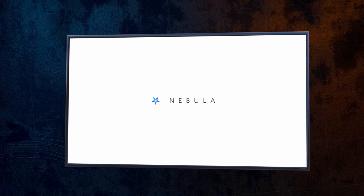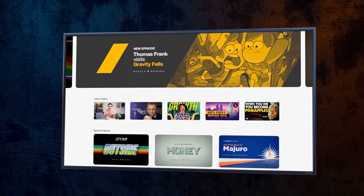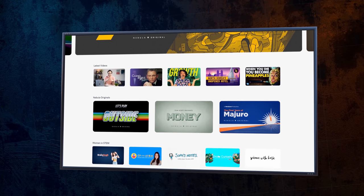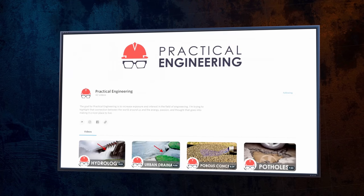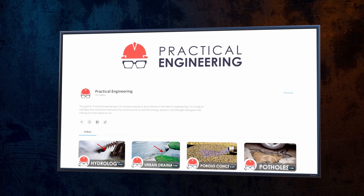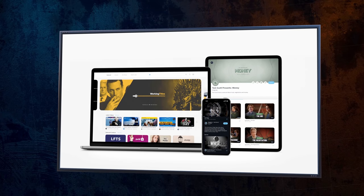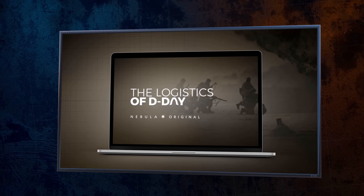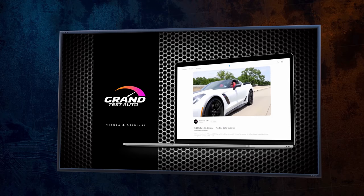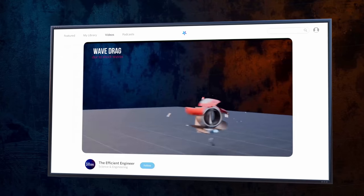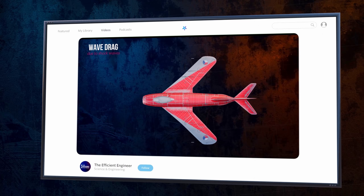For those who don't know, Nebula is a video streaming service built entirely by educational creators. It's home to some of the best independent creators out there, including Mustard, Real Engineering, and Practical Engineering. It's a place where creators can experiment with new formats and longer videos. So, in addition to their normal content, which is completely ad-free on Nebula, you can explore exclusive Nebula originals that you won't be able to watch anywhere else, or dive a little deeper with bonus content, like the extended version of this video, where I've replaced this ad with a look at induced drag, wave drag, and interference drag.